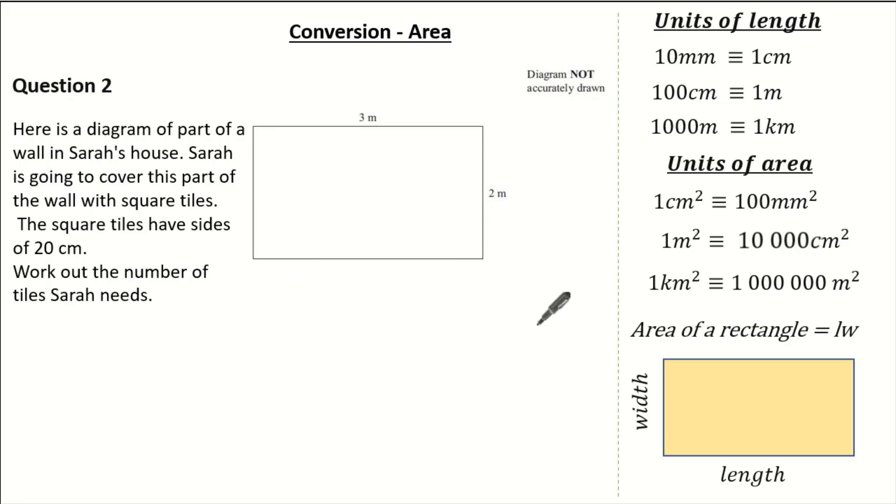I'm going to show you a couple of different ways to tackle this question. Always choose the method that's best for you, as long as you show your working out and you get the right answer. So firstly, let's convert. We know 2m is 200cm and we know 3m is 300cm.